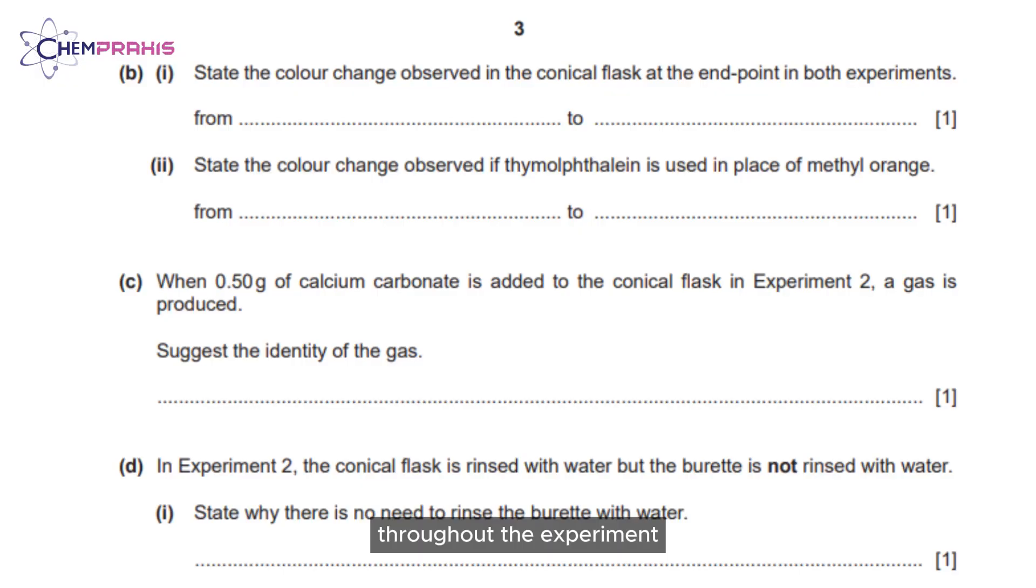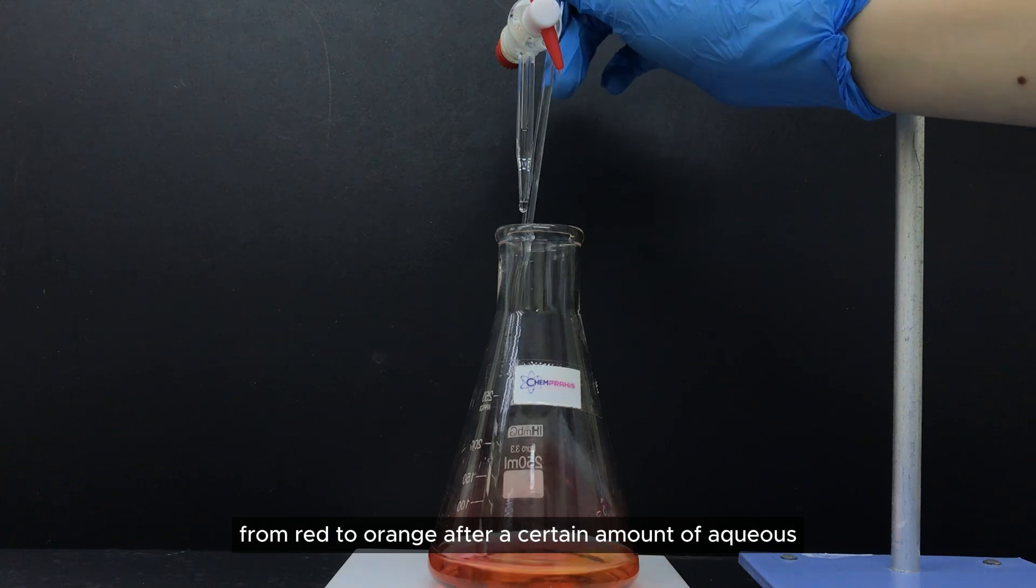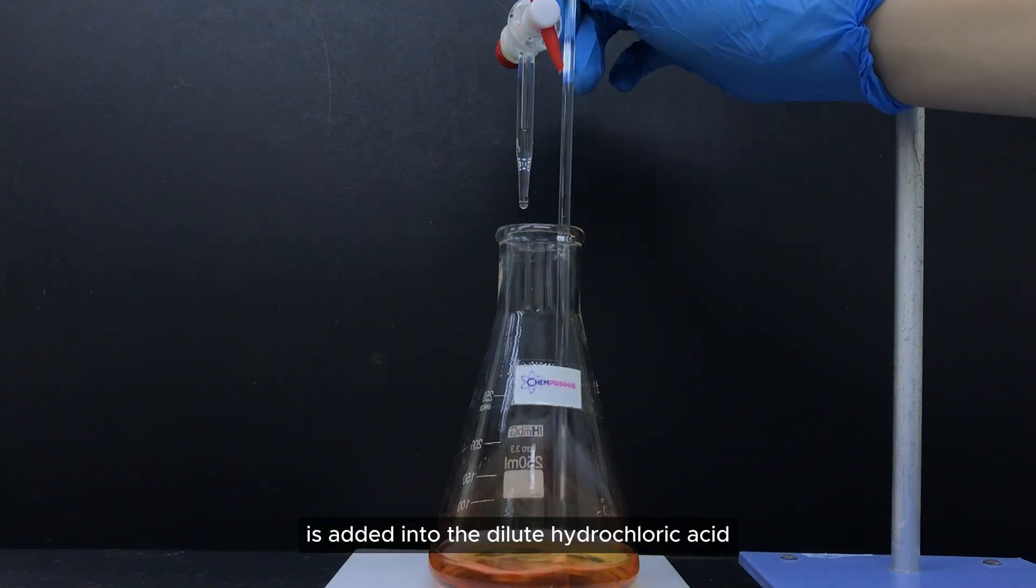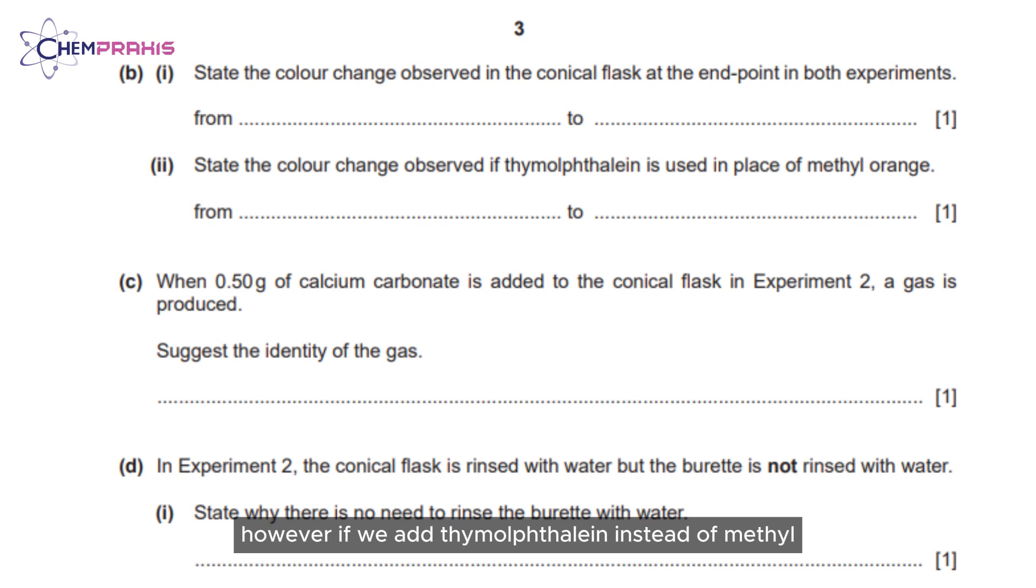Throughout the experiment, we observed that the colour changed from red to orange after a certain amount of aqueous sodium hydroxide is added into the dilute hydrochloric acid. However, if we add thymolphthalein instead of methyl orange into the solution, it will turn from colourless to blue instead as the solution is a base.